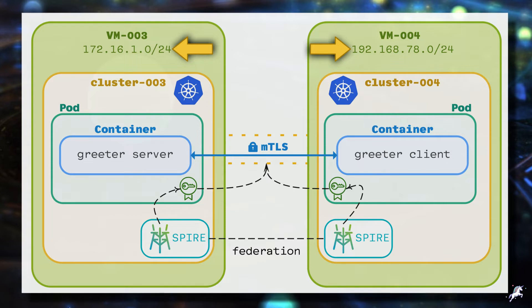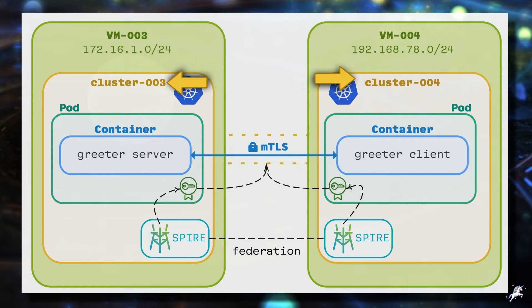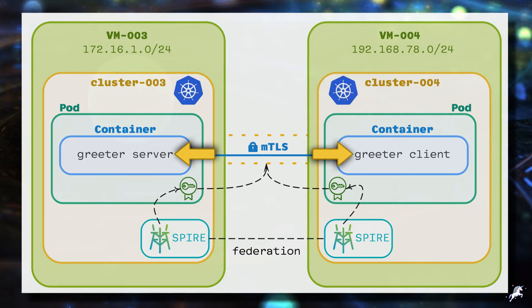To isolate things a bit further, we have two clusters, one in each of these virtual machines. Cluster 003 is a Kubernetes cluster that resides in VM3, and cluster 004 is a Kubernetes cluster that lives inside VM4. We want to deploy a simple greeting server application in cluster three and an associated greeting client application in cluster four, and let the client and server securely talk to each other over MTLS.